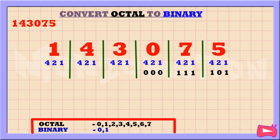Next is 0. We didn't use 4, 2, and 1, so let's replace it with 0. Next, 3 is the sum of 2 and 1. So, we're going to replace 2 and 1 with 1. We didn't use the 4, so let's replace it with a 0. Next, 4 is equal to 4, so we're going to replace 4 with 1. We didn't use 2 and 1, so let's replace it with a 0.